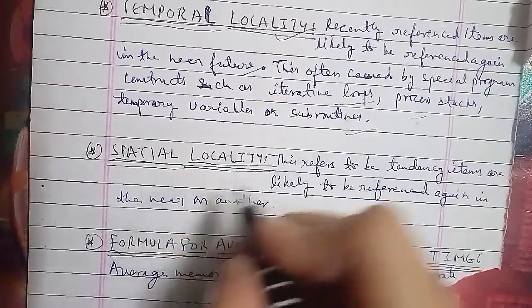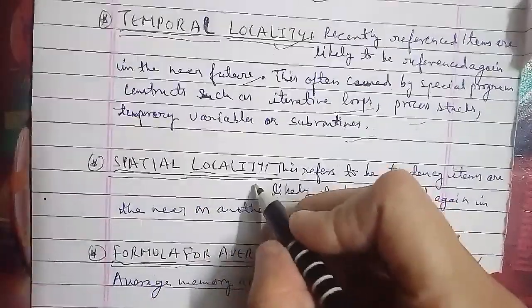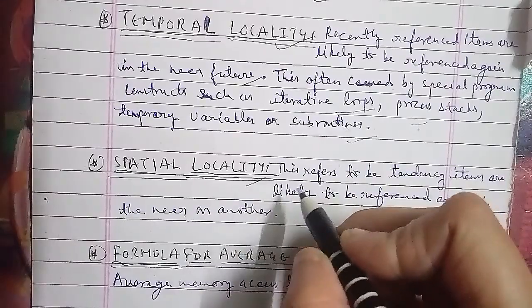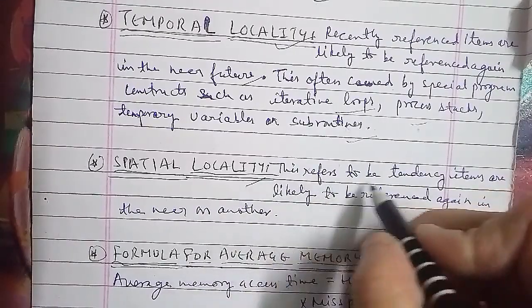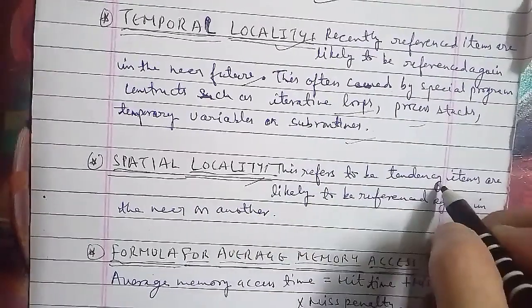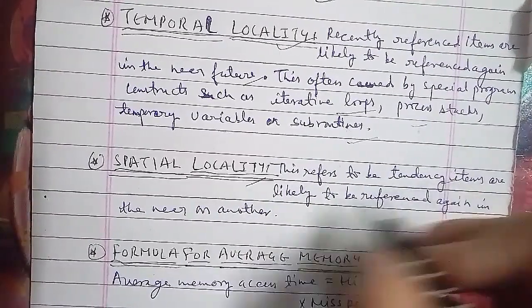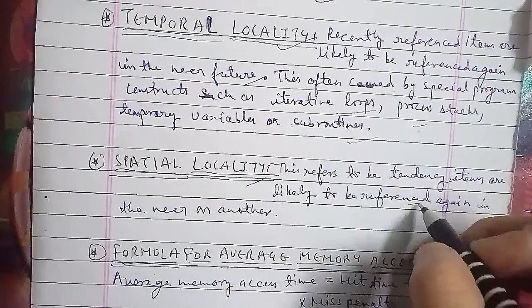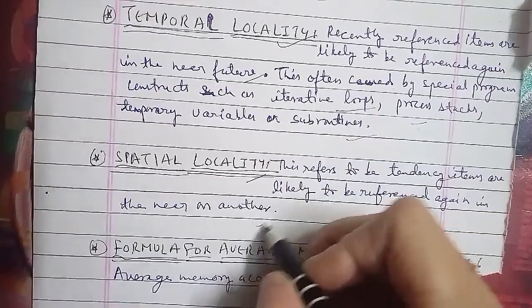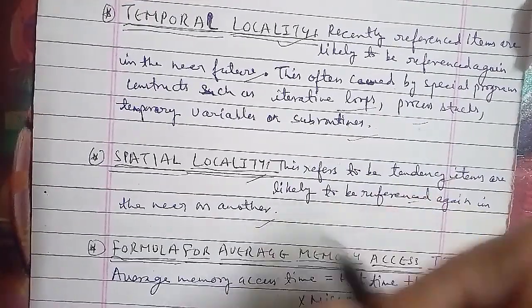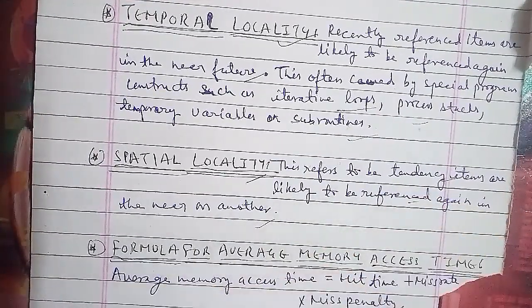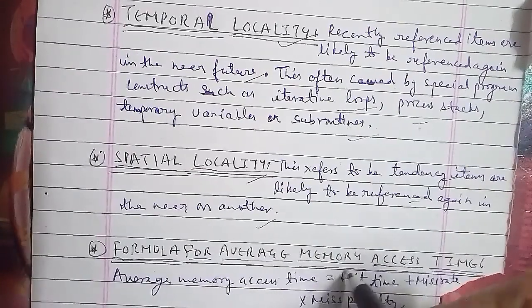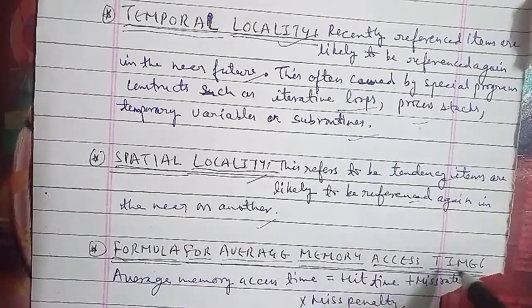Formula for average memory access time: average memory access time equals hit time plus (miss rate multiplied by miss penalty).